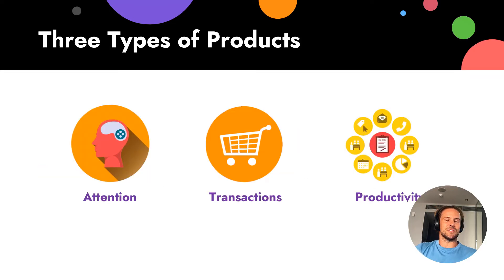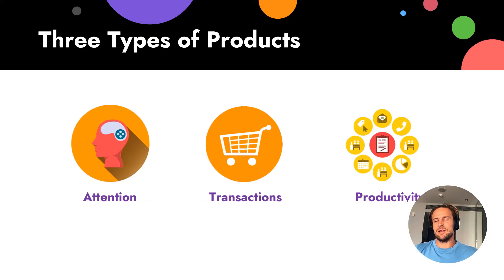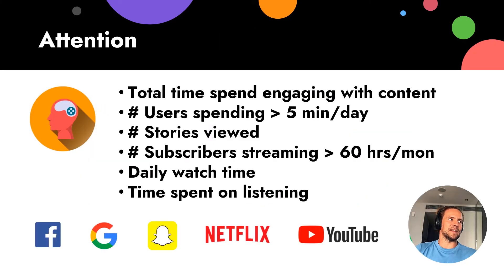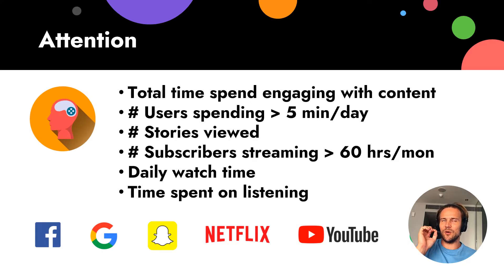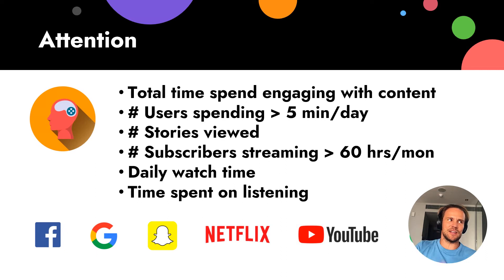There are three types of products: attention, transactions, and productivity. Let's talk in depth about each of them. Attention means we focus on attention — the main idea is how we fight for the customer's attention.